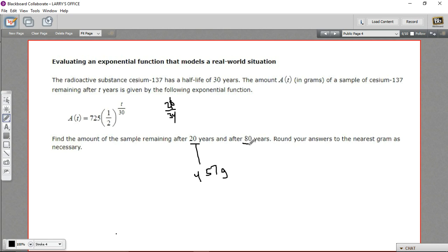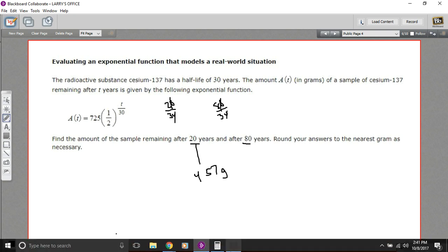Well, let's try after 80 years. We should have less of this substance left after 80 years. If I put in 80 for t, we've got 80 over 30. So our power that we're raising this to is the eight-thirds power. So I'll take one-half to the eight-thirds power, and then multiply it by 725. Let's try that.